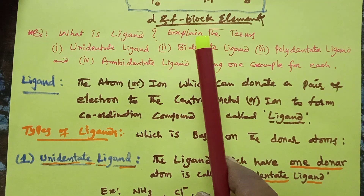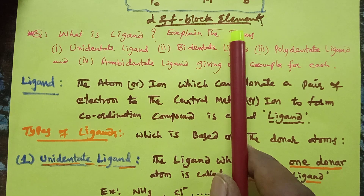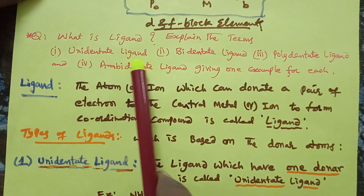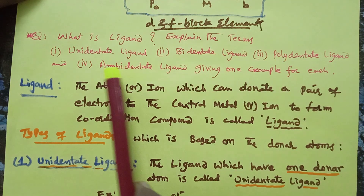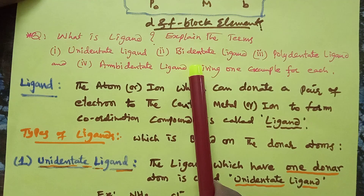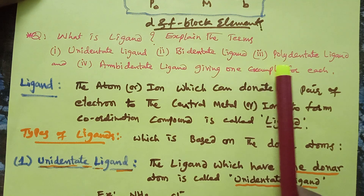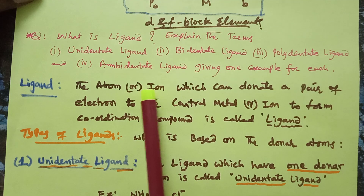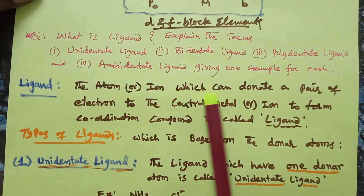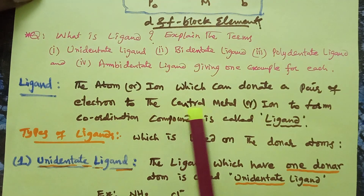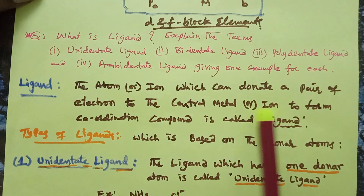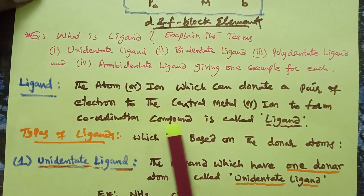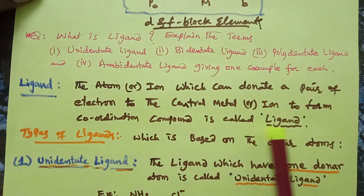The next question is from d and f block elements: What is a ligand? Explain the terms unidentate ligand, bidentate ligand, polydentate ligand, and ambidentate ligand, giving one example of each. Definition of ligand: a molecule, ion, or atom which can donate a pair of electrons to the central metal ion or atom to form a coordinate bond or coordination complex compound is called a ligand.